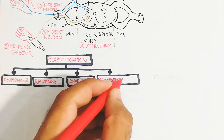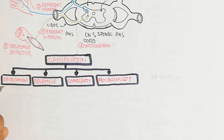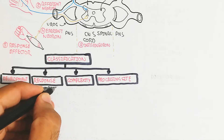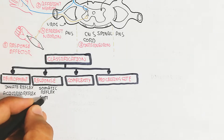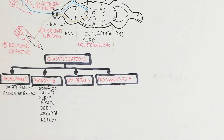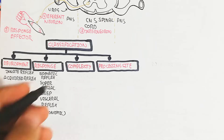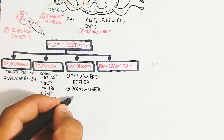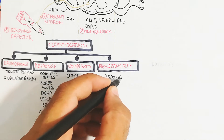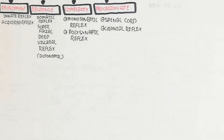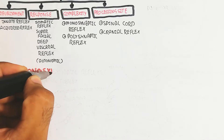Reflexes can be classified by development, response, complexity, and processing. By development: innate reflexes (present from birth, rudimentary) and acquired reflexes (adaptive). By response: somatic reflexes — superficial, deep, or visceral — and autonomic reflexes. By complexity: monosynaptic or polysynaptic. By processing side: spinal cord reflexes or cranial reflexes involving the brain.